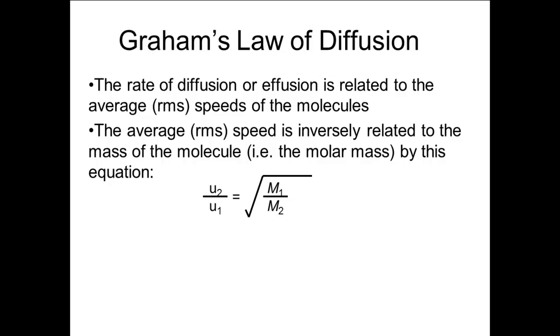Solving gives us the equation u2 over u1 equals the square root of m1 over m2. So the rms speed ratio is related to the square root of the inverse of the molar mass ratio.